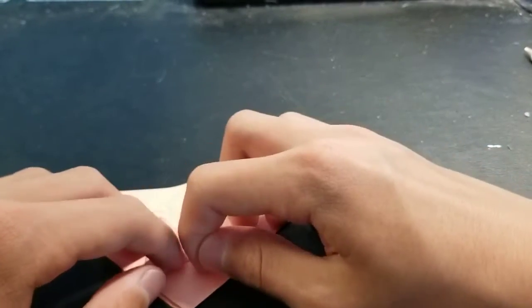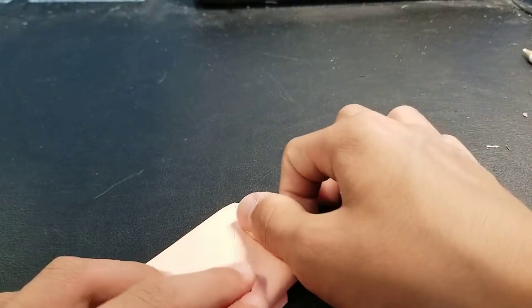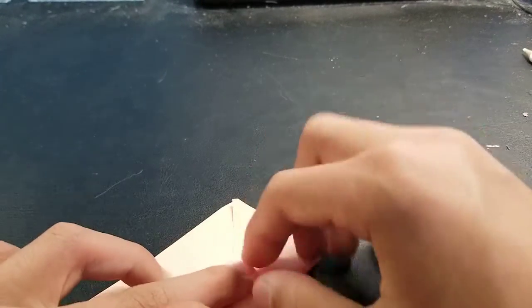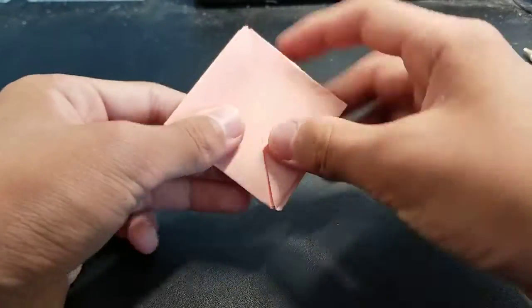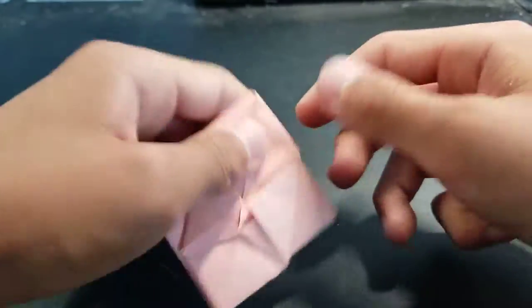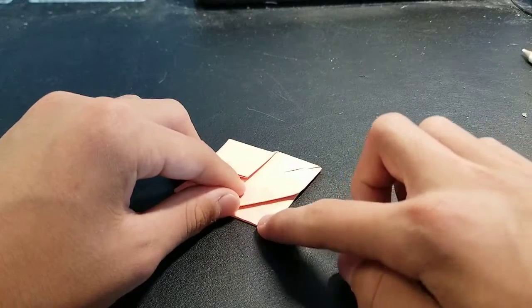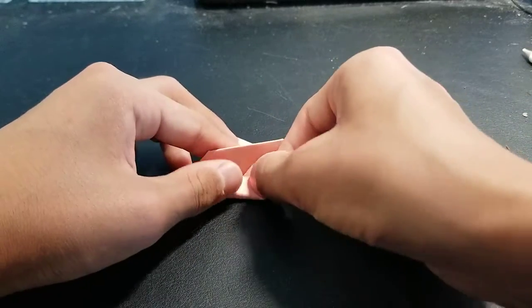You want them to stay flat. All right, turn it over, and just like you did on the other side, fold these two sides up. Like that, so just fold them up, and then turn it over and fold this point to touch this point in the middle, like that.